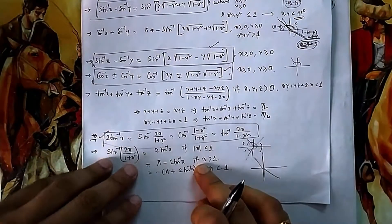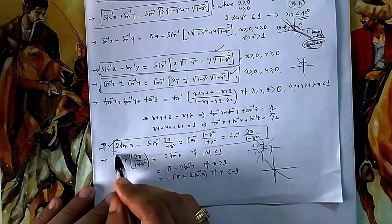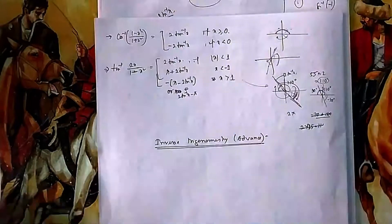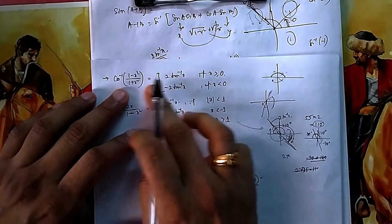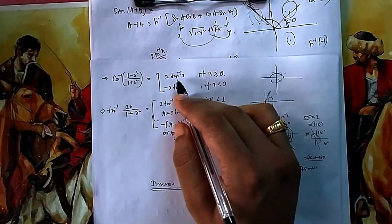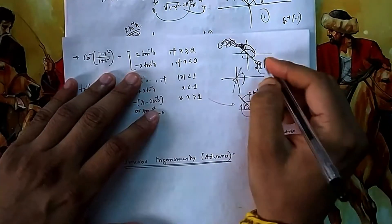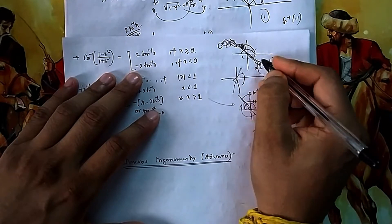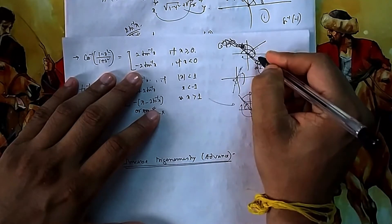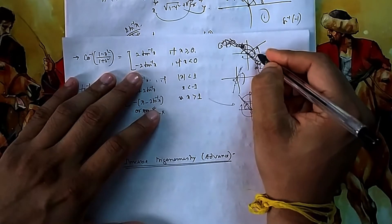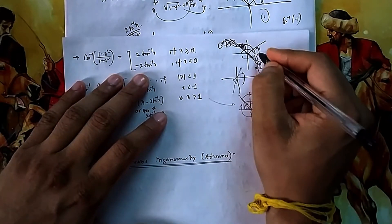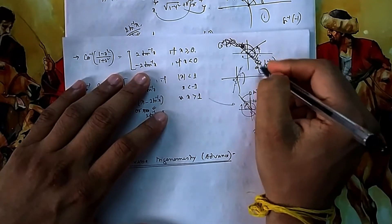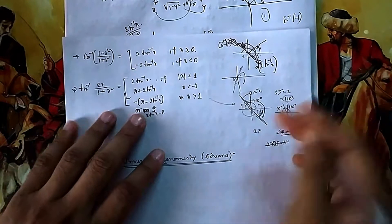These additional conditions are required for the advanced level; for basic level, just remember the boxed formula. For cos⁻¹(1−x²)/(1+x²) = 2tan⁻¹x when x ≥ 0. When x < 0, 2tan⁻¹x is in the fourth quadrant where cos is positive, but cos⁻¹ outputs the first and second quadrants — not the fourth. So you need to shift from the fourth quadrant to the first or second quadrant accordingly.